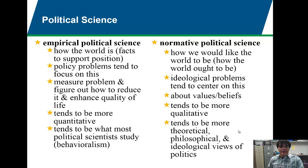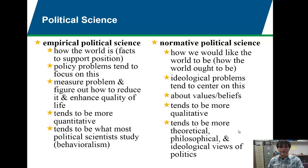Let's start with the left column: empirical political science. Remember, empirical means factual or statistical. Empirical political science looks at how the world is by looking at facts to support positions. Policy problems tend to focus on this — you want the facts behind a situation before you can act on it. Empirical political science measures the problem and figures out how to reduce it and enhance quality of life using statistical analysis. It tends to be more quantitative. Most political scientists study empirical political science, and myself as a grad student in political science, I do study empirical political science.